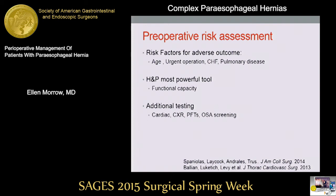Other things that may affect your risk assessment: the strongest risk factors for adverse outcome in a paraesophageal hernia repair include age, an urgent nature of the operation, congestive heart failure, and pulmonary disease. The history and physical is really the most powerful tool for risk assessment, and you want to pay close attention especially to the patient's functional capacity, which for a lot of these patients is not great — many of them are quite frail. These are some additional tests that may help you stratify the patient's risk for an elective operation.